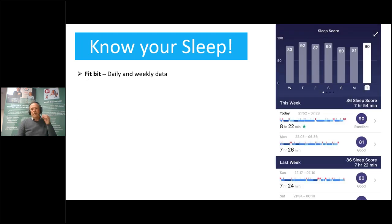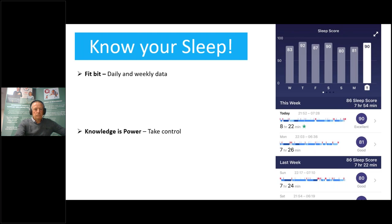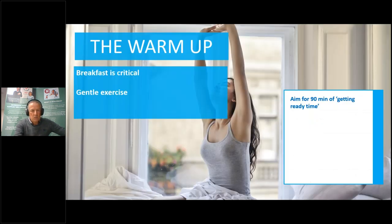Wearable tech is great. With Fitbit you get daily and weekly data. You can see my daily scores — I'm normally good, around 86-87 weekly average over the last year and a half. My daily average sleep is seven hours 54 minutes — so 24 minutes of wasted sleep every night that I didn't need. Knowledge is power. Take control. If you understand sleep, understand what's important, understand the benefits of good sleep, and you understand how to sleep and work back from when you need to get up, you will begin to take control.